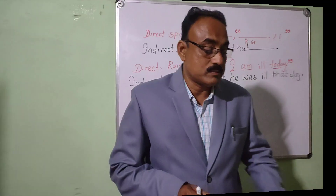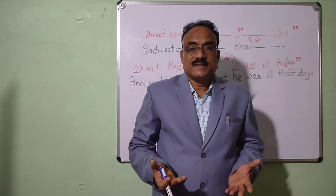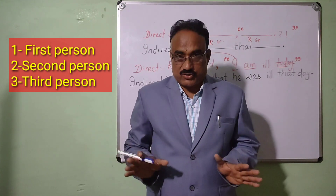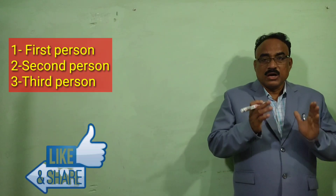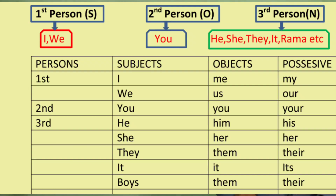First, we discuss the pronouns. Persons are divided into three parts: first person, second person, and third person. Let us discuss according to subject form, object form, and possessive form. First person: I — subject; me — object; mine — possessive. We — subject; us — object; our — possessive. Second person: you, you, your. Third person: he, him, his. She, her, her. They, them, their. It, it, its. Boys: them, their.